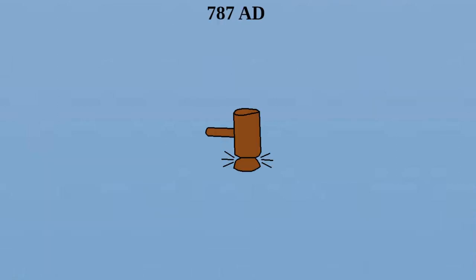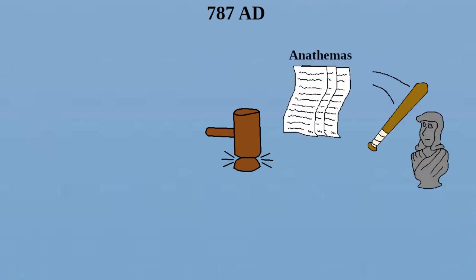The council itself began in 787 AD with the intention of dealing with the iconoclast issue, and issued a few anathemas and quite a number of new canons as well.